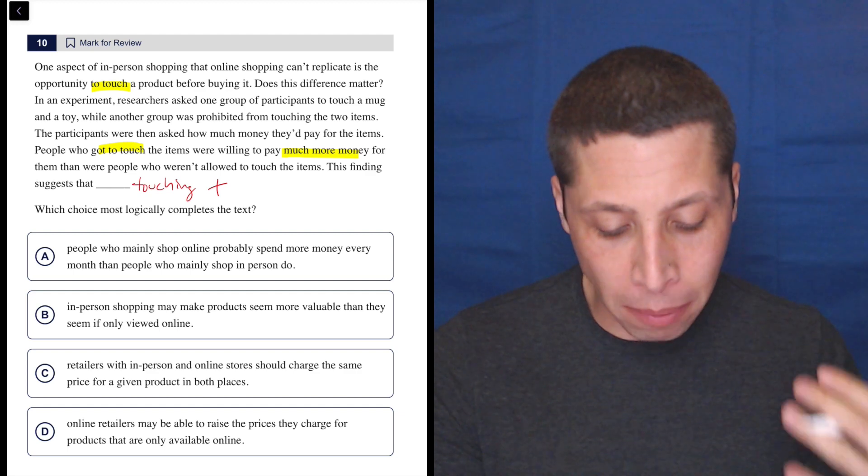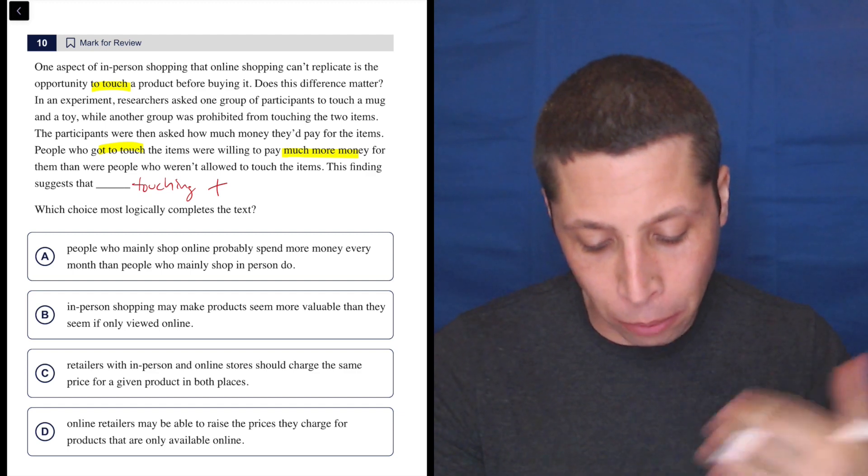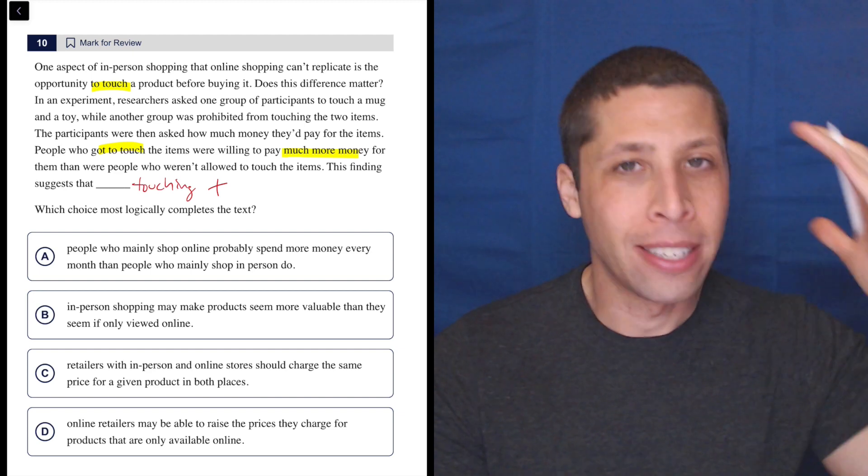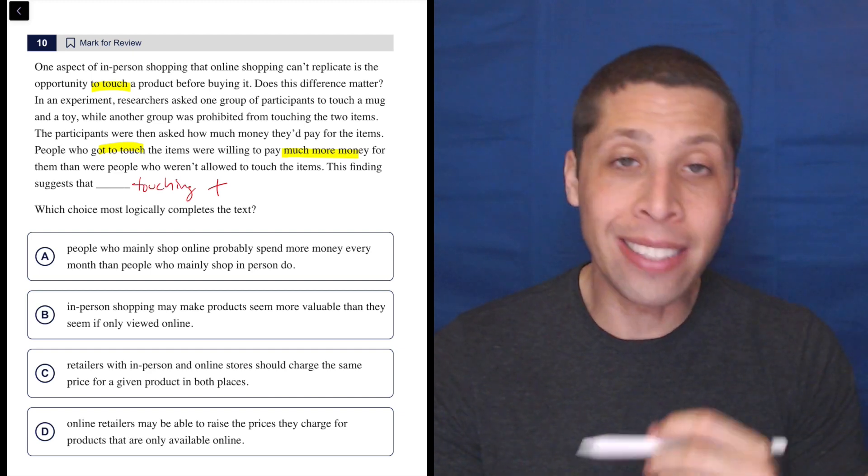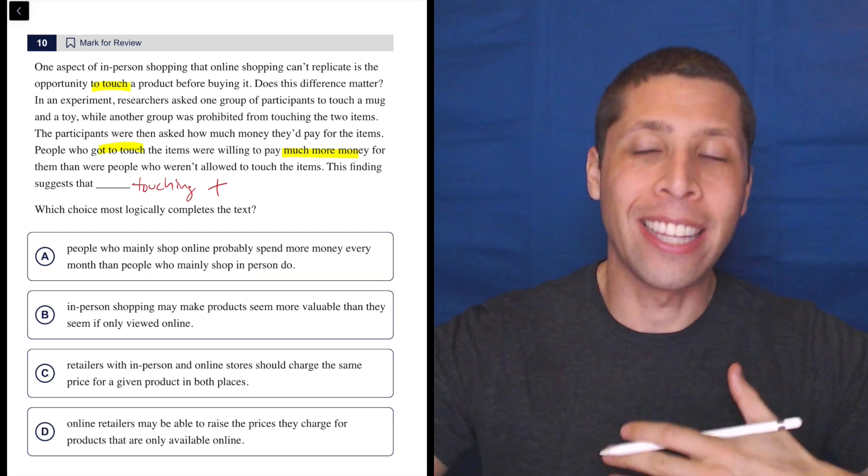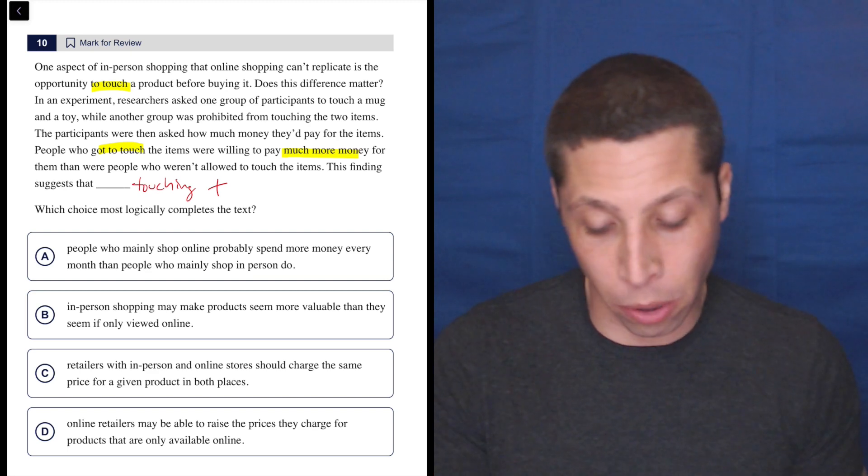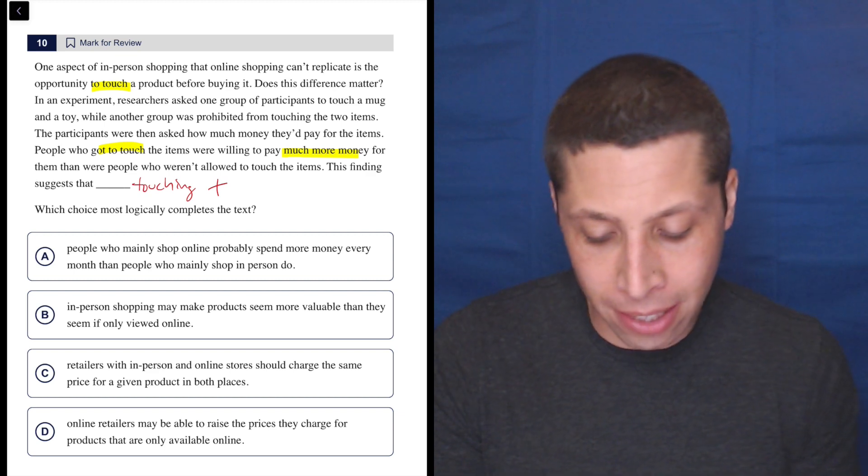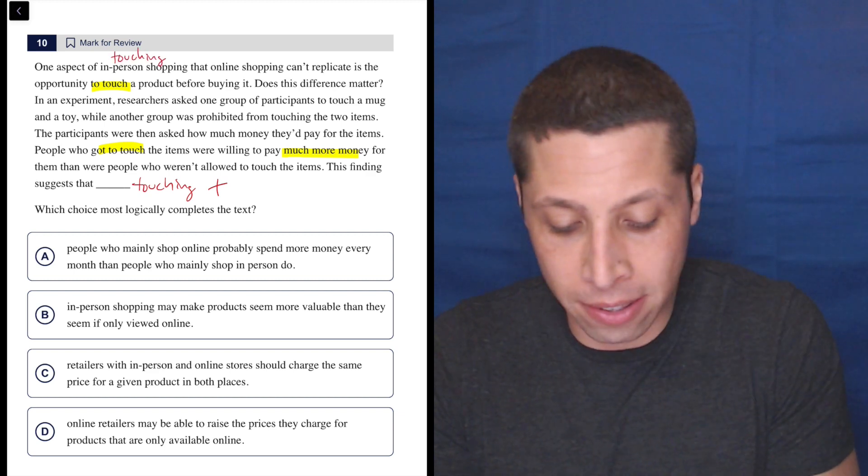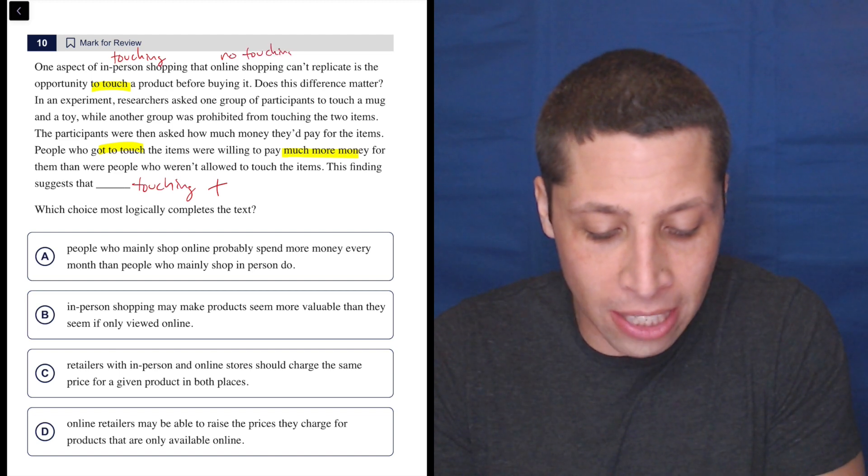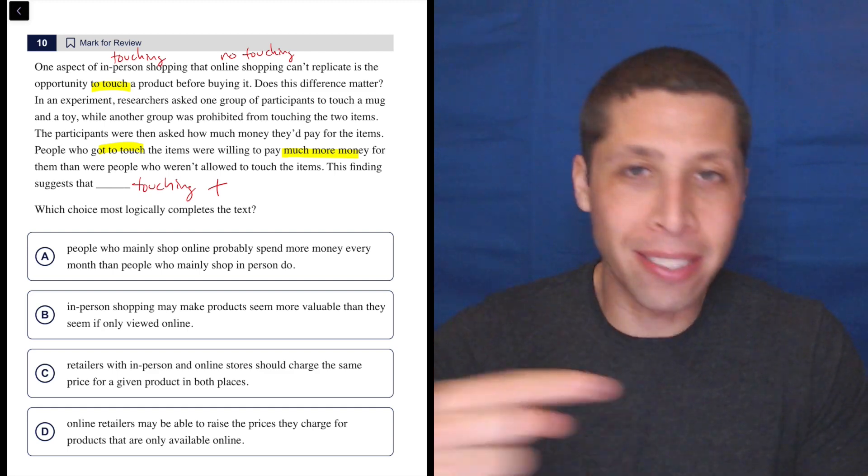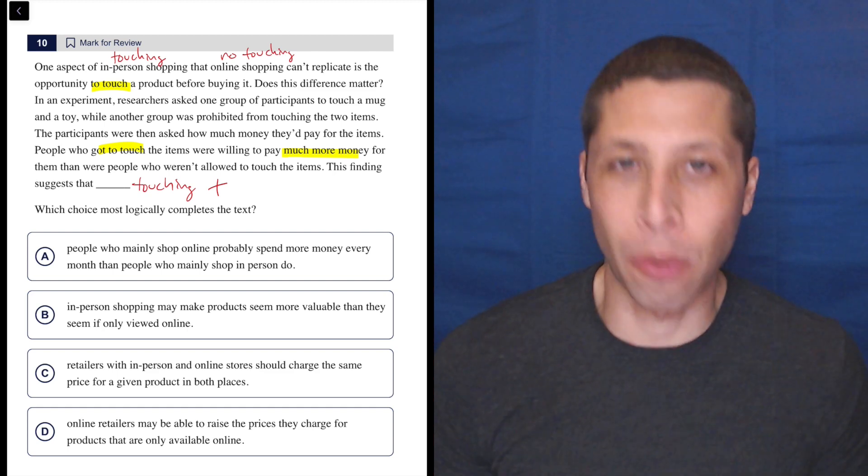A, people who mainly shop online probably spend more money every month than people who mainly shop in person do. Well, this seems like a lot of thinking here. It doesn't say anything about touching good, but it does kind of start to do this thing the SAT sometimes does where they translate a word into another word. So if we go back to the beginning of this passage, in-person shopping is equivalent to touching things and online shopping is no touching. So this is a case where the initial definition is really helpful to go back to. They're basically talking about touching by using different words.